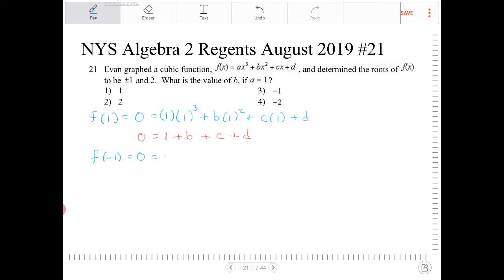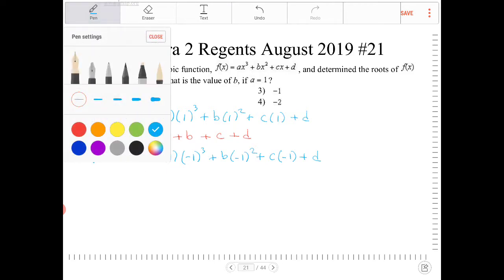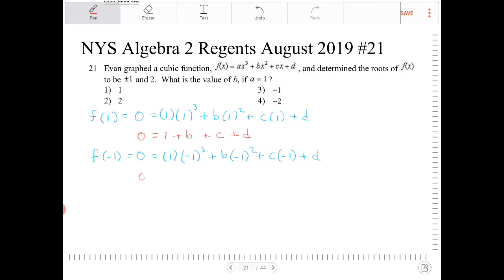Again, a is 1, x is negative 1, and then b times negative 1 squared plus c times negative 1 plus d. And what this will turn into is 0 equals negative 1 plus b minus c plus d equals 0.